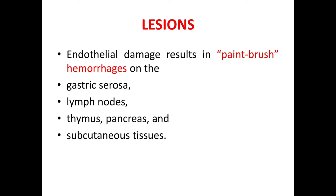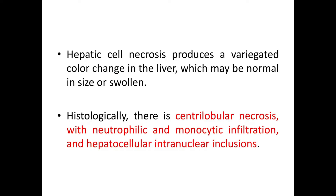Now let's see the lesions. Endothelial damage — the primary target of the virus — results in paintbrush hemorrhages on the gastric mucosa, lymph nodes, thymus, pancreas, and subcutaneous tissue. Endothelial damage and hepatic cell necrosis produce a variegated color change in the liver, which may be normal in size or swollen. Histologically, there is centrilobular necrosis with neutrophilic and monocytic infiltration and hepatocellular intranuclear inclusions.